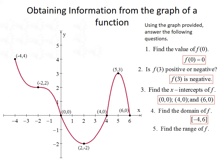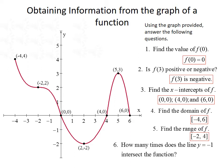Next, we want to find the range of the function f — the possible y values. The smallest y value on our graph comes at the point (2, −2), so the smallest y value is negative 2. The largest y value comes at the point (−4, 4), so our high y value is 4. Our range goes from negative 2 to 4 with those points included, so we use square brackets. Finally, the line y equals negative 1 intersects the function twice.